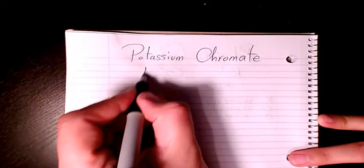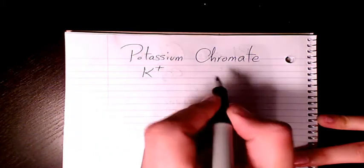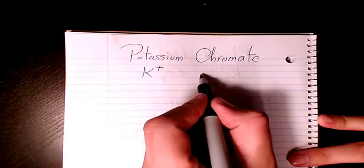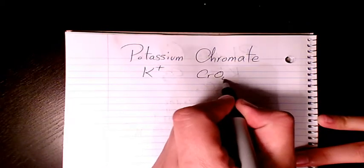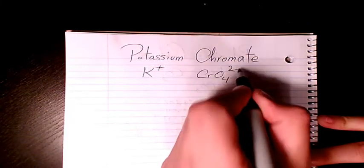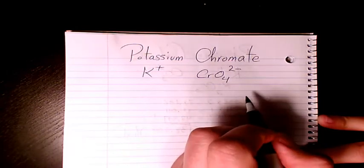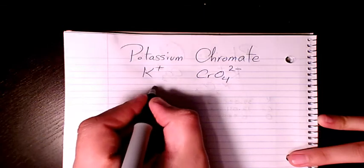So potassium is K, it belongs to group one, so it's K plus. And chromate is a polyatomic ion and it is CrO4 2-minus. So CrO4 2-minus is chromate, that's a polyatomic ion.